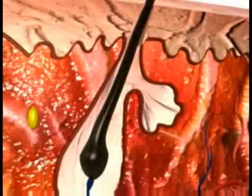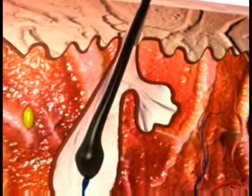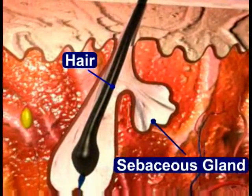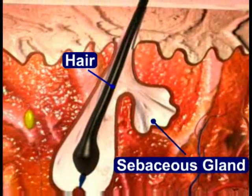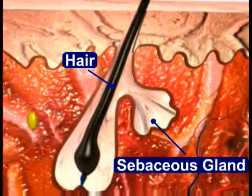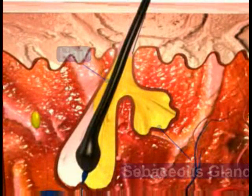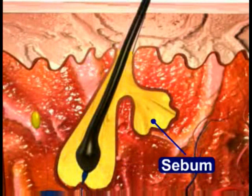The pilosebaceous unit, or PSU, of the skin consists of the sebaceous gland and the hair follicle. The sebaceous gland secretes an oily substance called sebum, which protects the hair and skin.